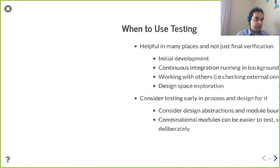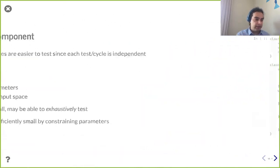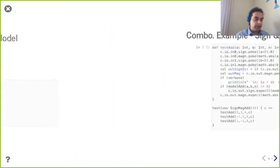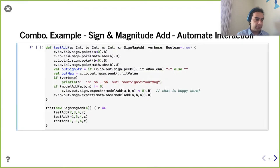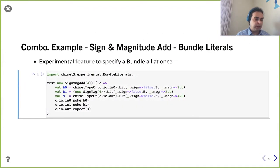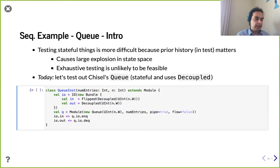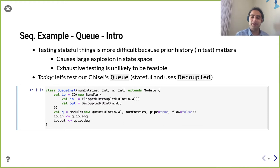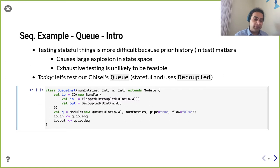We're not going to re-cover everything from last time, but we briefly introduced how we're going to test a component with state. In particular, we're going to test the queue module built into Chisel. Even if it doesn't show any new bugs, we'll have a good experience seeing how to put all this together.